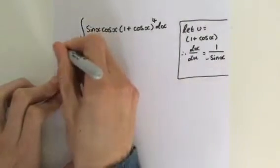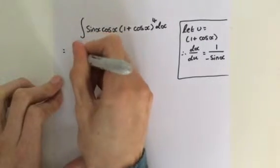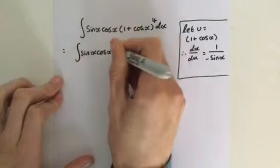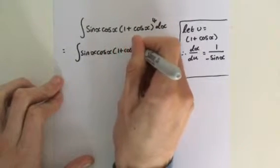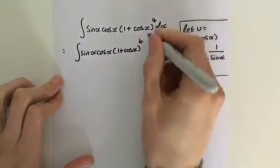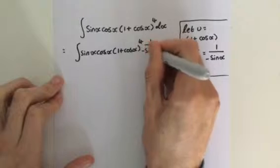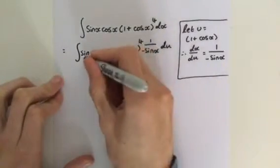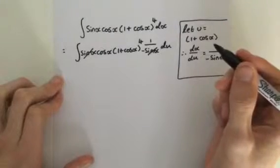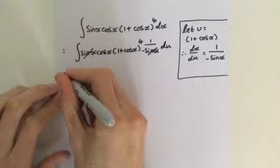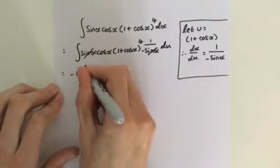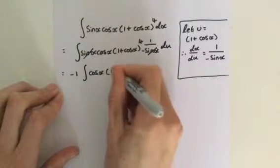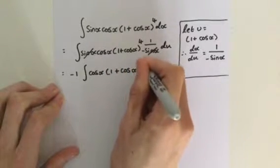What we do now is we have the integral of sine x, cosine x, multiplied by 1 plus the cosine of x to the power of 4. Then we multiply this by 1 over minus sine x, du. We can see here that the sines cancel out to give us minus 1.